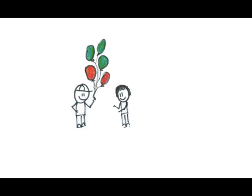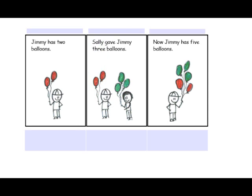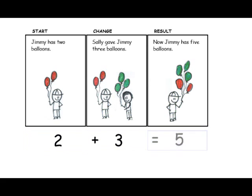This simple story is easy to imagine as a cartoon strip with a beginning, a middle, and an end. The beginning we'll call the start. The middle describes a change and the end describes the result. The start, change, and result of this story are easily expressed as a number sentence.